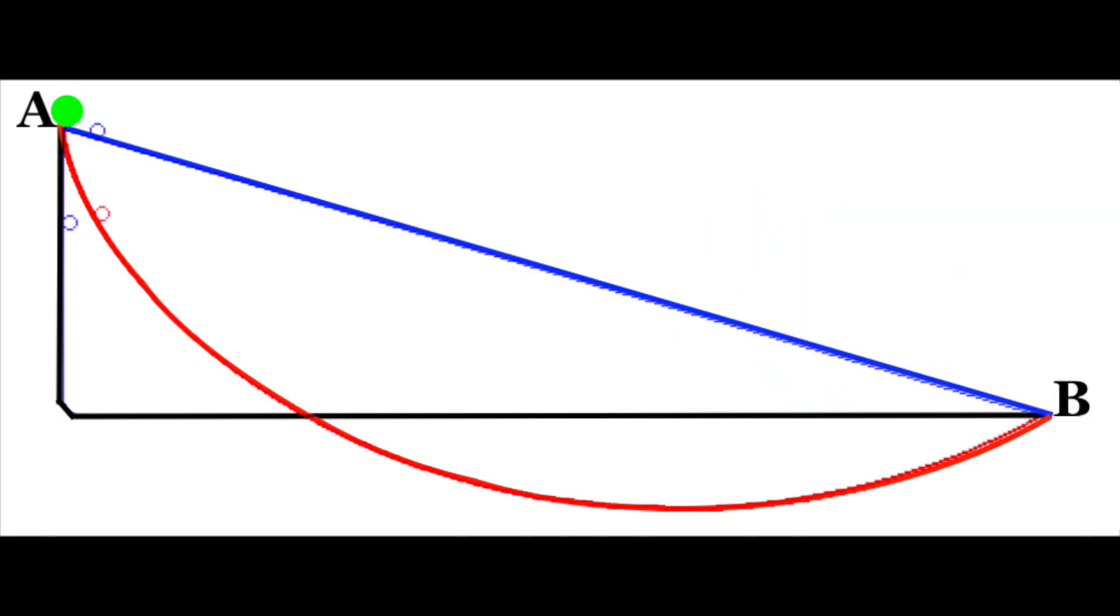So, to conclude, yes, point A to B, fastest way is the red line, not the blue line, which looks like it should be, and not the black line either. And black line is actually the second fastest way. So, the shortest way is actually the slowest way. Isn't that amazing?